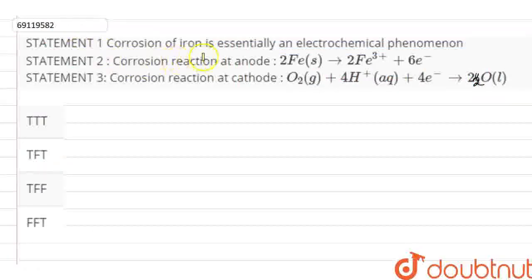Hello everyone! Statement 1 is given that corrosion of iron is essentially an electrochemical phenomenon. Statement 2 is given that corrosion reaction at anode, corrosion reaction at cathode. So, I will tell you which statement is true and false.